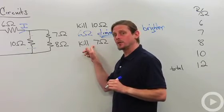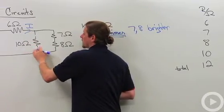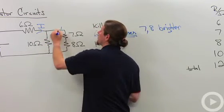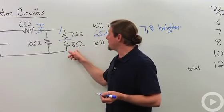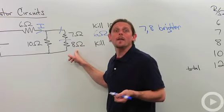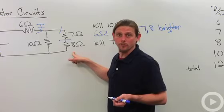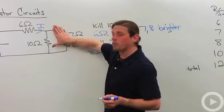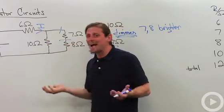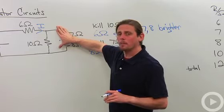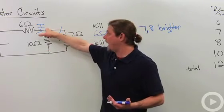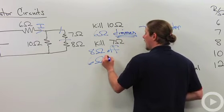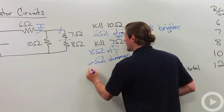Now let's look at what will happen if we kill the 7 ohm resistor instead. What's going to happen to the 8 ohm? Well, the 8 was in series with the 7, and that means since no current can flow through the 7, none can flow through the 8 — so the 8 ohm will go off. That kills that whole branch. Now we're killing a branch in parallel, which reduces the overall current, but it will increase the amount of current that goes through the 10 ohm. So the 6 ohm gets dimmer, and the 10 ohm gets brighter.